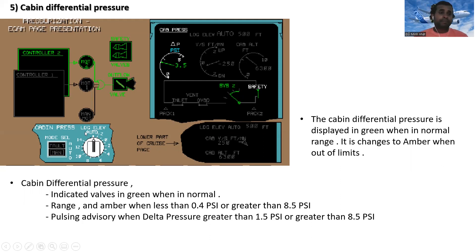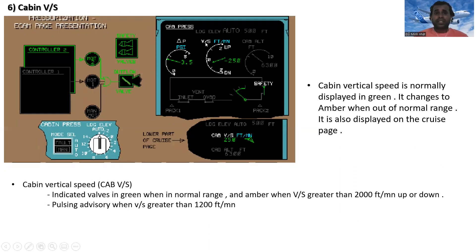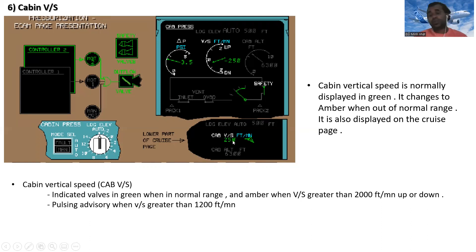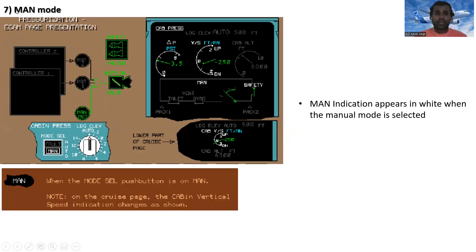Cabin vertical speed is measured in feet per minute. It is normally displayed in green and changes to amber when out of normal range. This indication is also displayed on the cruise page. It shows amber when vertical speed is greater than 2000 feet per minute up or down, and a pulsing advisory appears when vertical speed exceeds 1200 feet per minute.